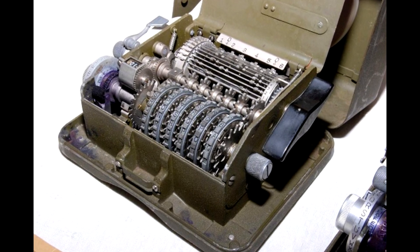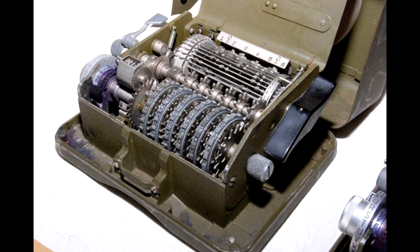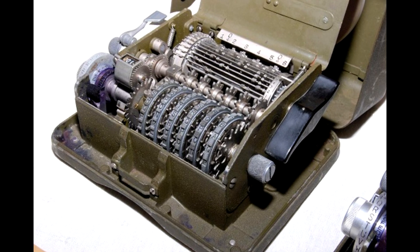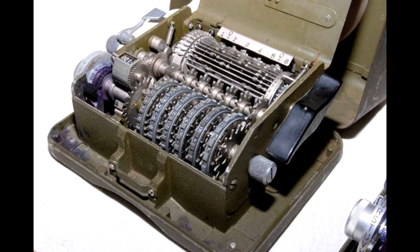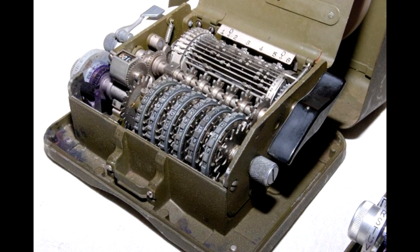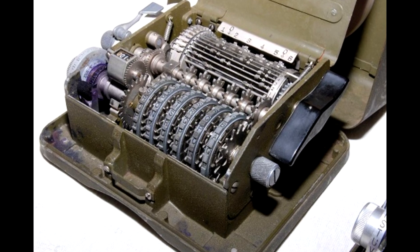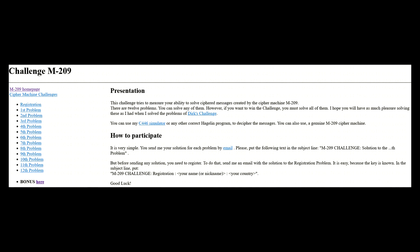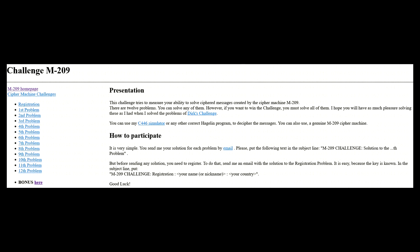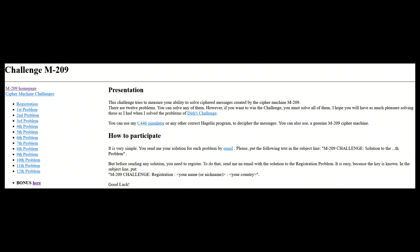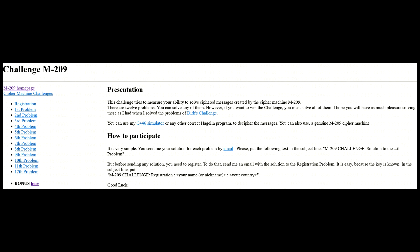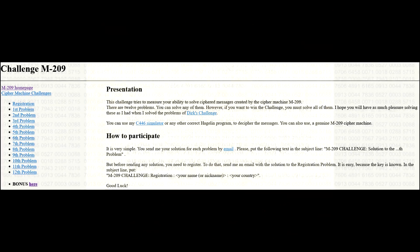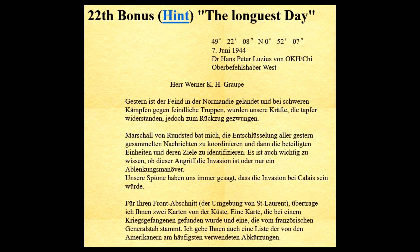The M209 was not particularly secure, but this wasn't considered a huge drawback, since it was only used for messages that would be quickly outdated, and so by the time that anyone could decode them, they'd no longer be valuable. But since they're relatively simple to decode, there are many examples of solved messages and challenges for codebreakers to practice on. Forty of these challenges were posted on the website of Jean-Francois Bouchaud, including 12 main challenges and 28 bonus challenges. All but one of the bonus challenges have been solved, but bonus challenge 22 still remains undefeated.